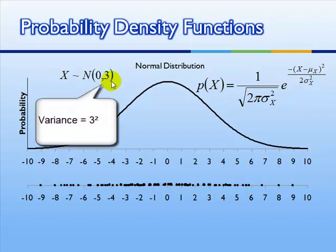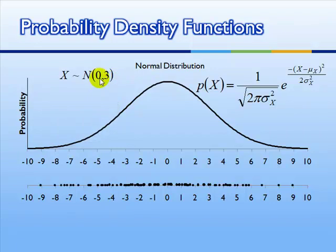In this case, the mean is 0, and the standard deviation is 3. So if we substitute in these numbers 0 right here, and 3 here, and we'll square it, and also here, and we'll square it, we get this.